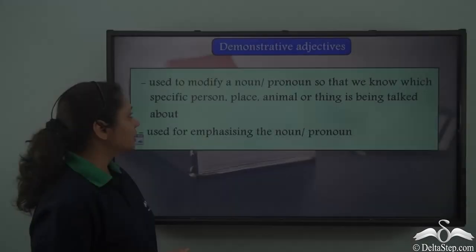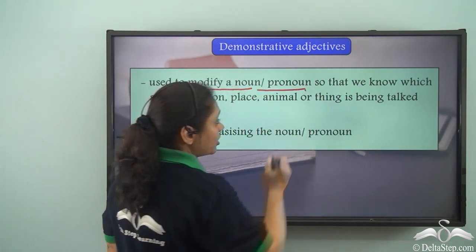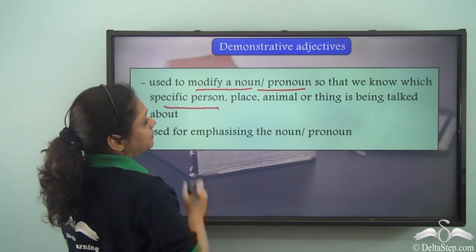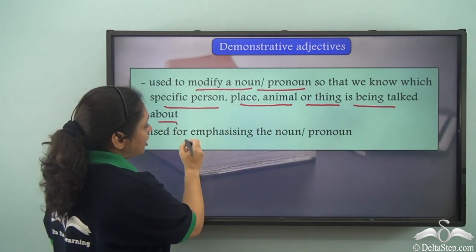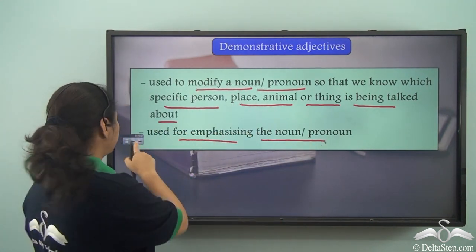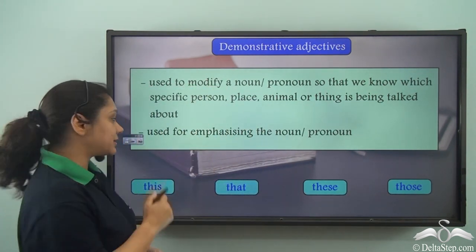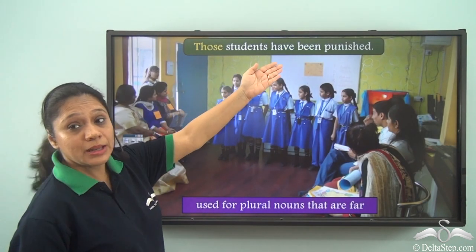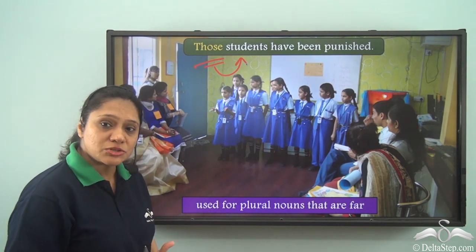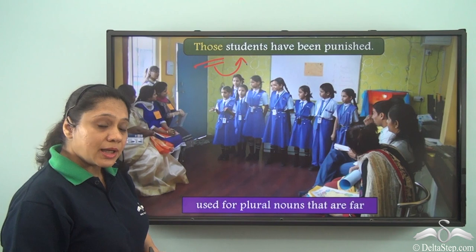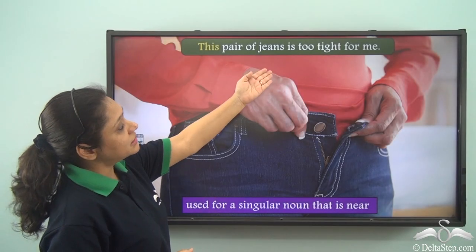In this sentence, the demonstrative adjective 'that' is referring to the noun 'house,' which is singular and far in distance. Demonstrative adjectives are used to modify a noun or a pronoun so that we know which specific person, place, animal, or thing is being talked about. Words like this, that, these, and those are examples of demonstrative adjectives. For example, 'Those students have been punished' — here 'those' is modifying the noun 'students,' referring to some particular students. Those is used for plural nouns that are far.